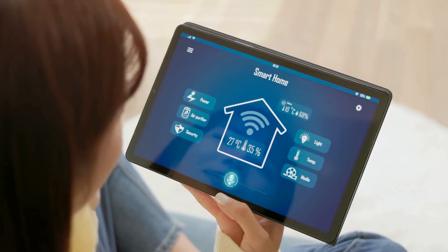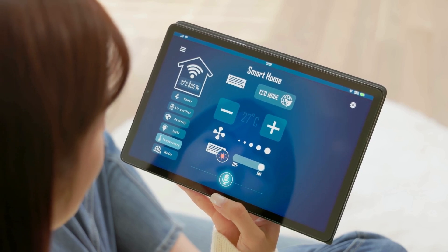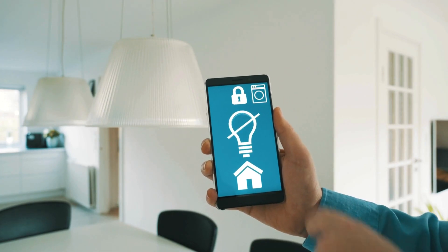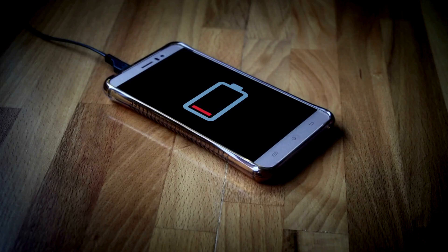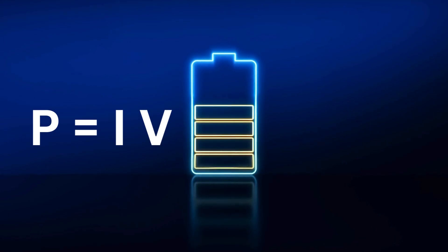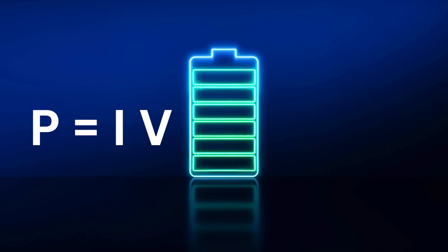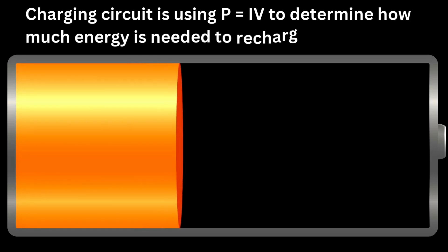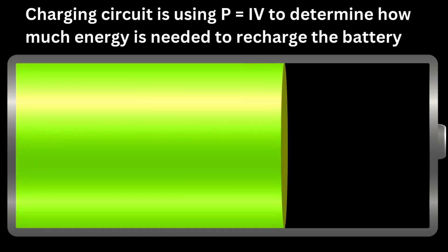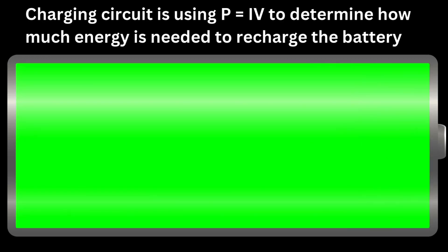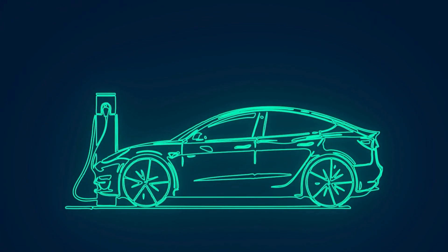First up: smartphones and laptops. Your devices use power all the time — charging the battery, running apps, playing music, or making calls. The battery inside your phone delivers voltage, and the current flows through the circuits as your phone uses power. Battery life is determined by how much power P is being used, based on the current I and voltage V from the battery. Every time you charge your phone, the charging circuit uses P = IV to determine how much energy is needed. If the voltage is too high or the current is too low, it might damage the device or reduce its lifespan. Understanding P = IV is key for manufacturers to design batteries that last longer, devices that don't overheat, and charging systems that are more efficient.